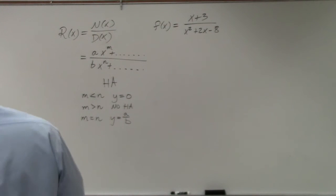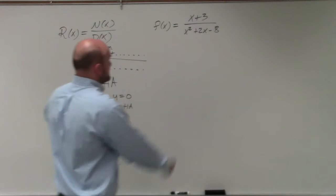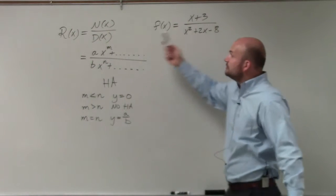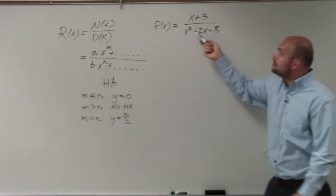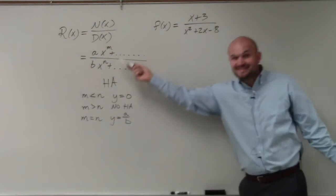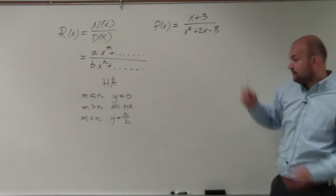All right, so for this example we have a rational function. You can see there's a polynomial in the numerator, which we'll call n(x), and a polynomial in the denominator, which we'll call d(x). They're both in standard form.